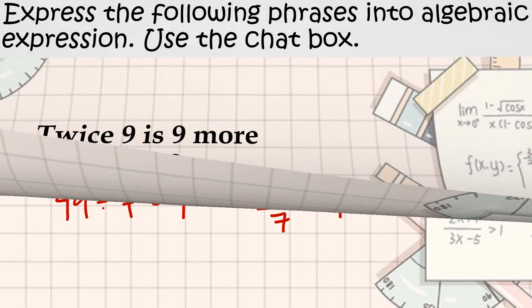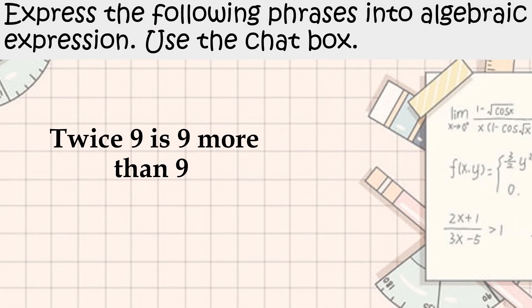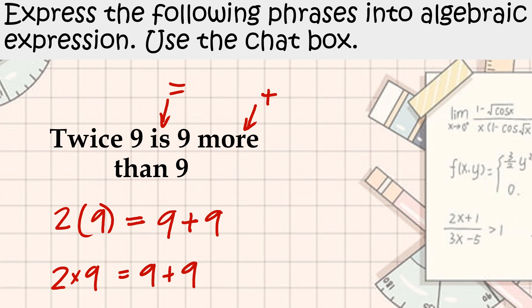And lastly, twice 9 is 9 more than 9. This one is tricky, so let's think it through. Twice 9, that's 2 times 9. Is means equals. 9 more than 9, more than means plus. So 2 times 9 equals 9 plus 9. Or you can also write 2 times 9 equals 9 plus 9.